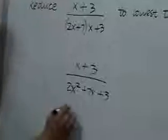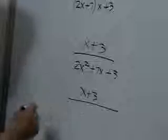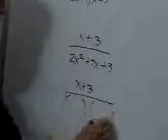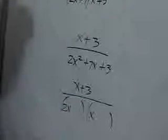So we have x plus 3 divided by this trinomial, which we will attempt to factor. For 2x squared, we have 2x and x.